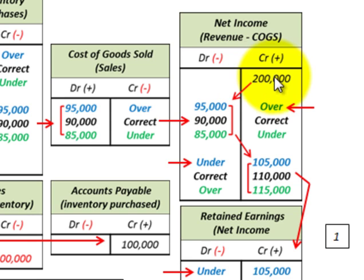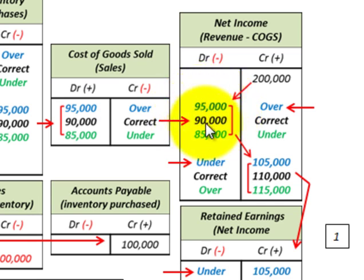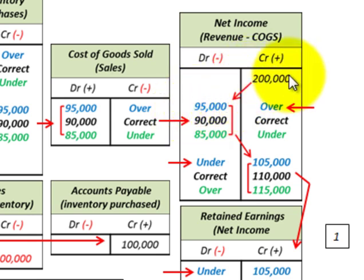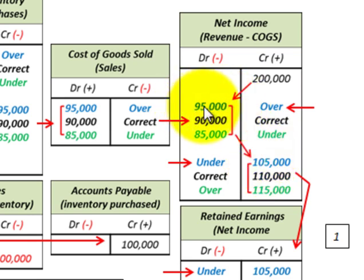We have revenue of $200,000. Subtracting cost of goods sold based on overvalued inventory — $95,000 — gives net income of $105,000. You can see that where we had overvalued inventory, we're going to have undervalued net income.